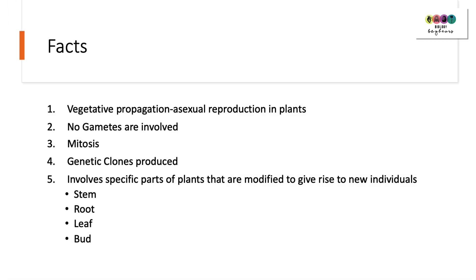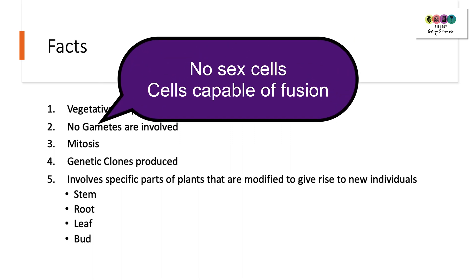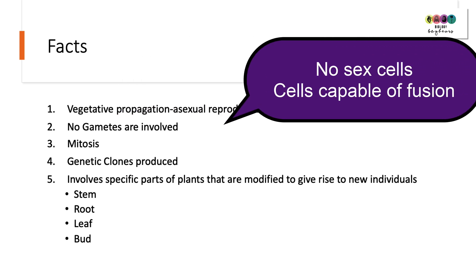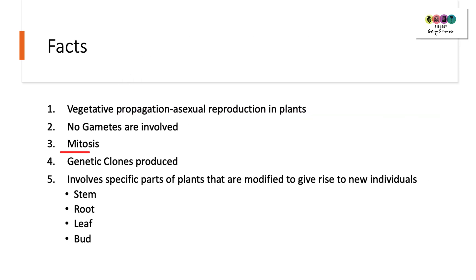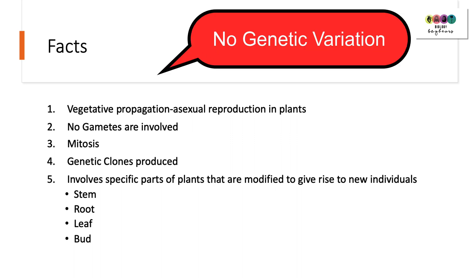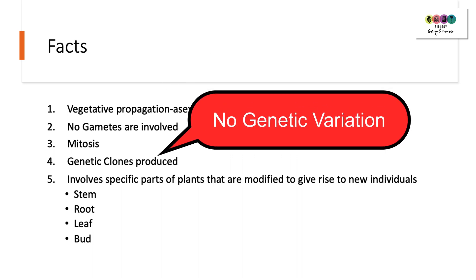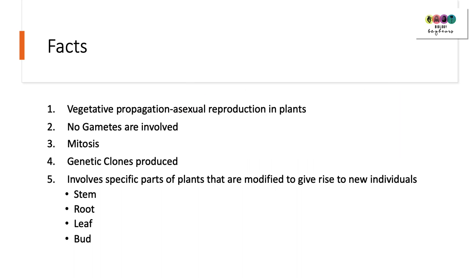Vegetative propagation, or asexual reproduction in plants, does not involve gametes — no sex cells, no cells capable of fusion. It only involves mitosis, that form of nuclear division, and it results in the formation of genetic clones, so the plants produced are genetically identical to each other.